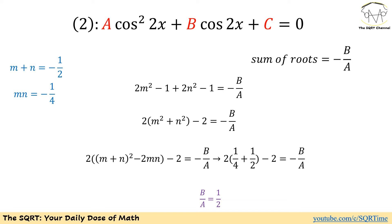If we factor out 2, then we can write M squared plus N squared as M plus N to the power of 2 minus 2 times MN. And we already have values for M plus N and M times N. If we replace all those values and simplify everything, we are going to end up with B over A needs to be 1 over 2.